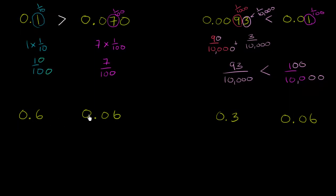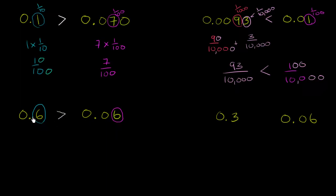Now let's look at 0.6 versus 0.06. Here I have a 6 in the tenths place, so it literally represents six tenths. In the second number, I have a 6 in the hundredths place. Six hundredths is definitely smaller than six tenths — a hundredth is a tenth of a tenth. So 0.6 is greater than 0.06.